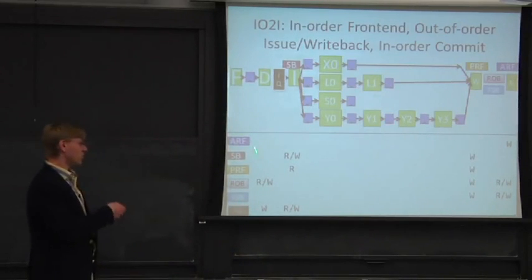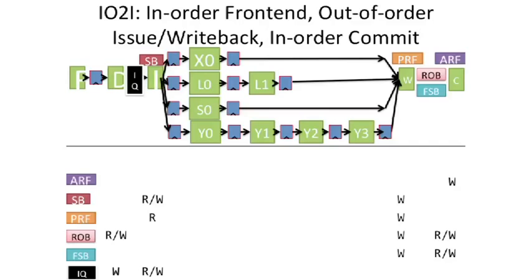So this has all of those structures that we had before. It's sort of the union of everything. We have issue queue, future store buffer, reorder buffer, physical register file, scoreboard, and architectural register file. This requires us to have everything.